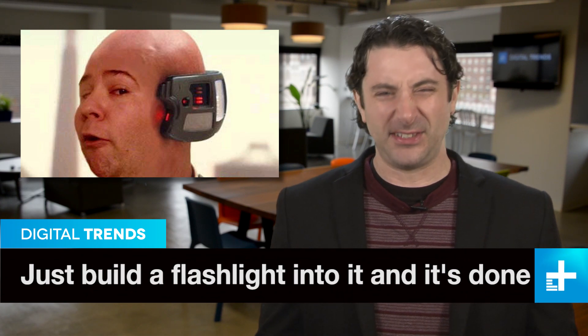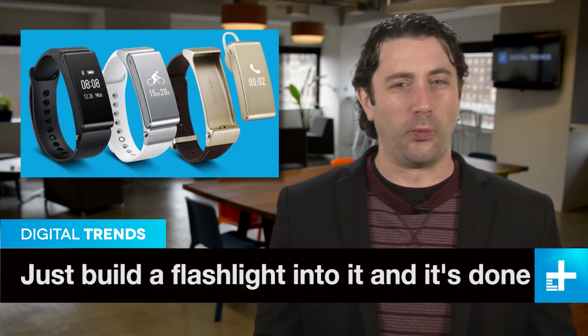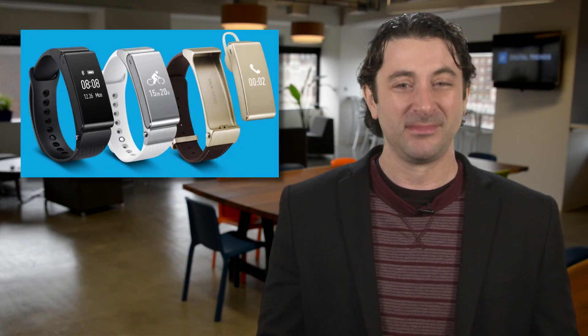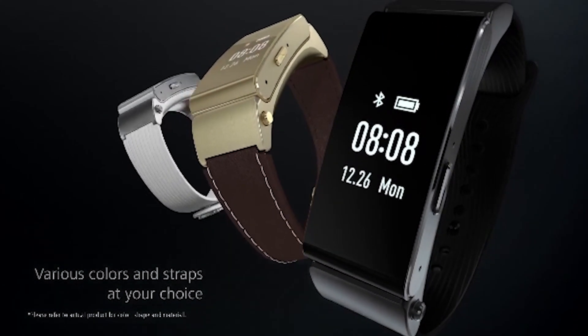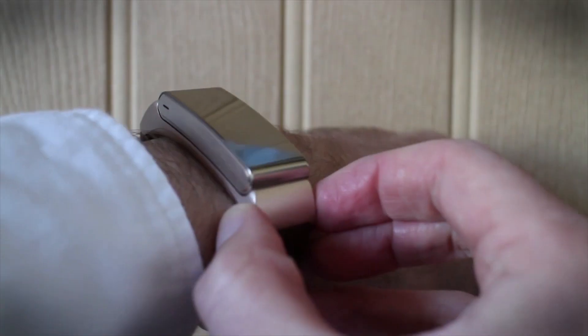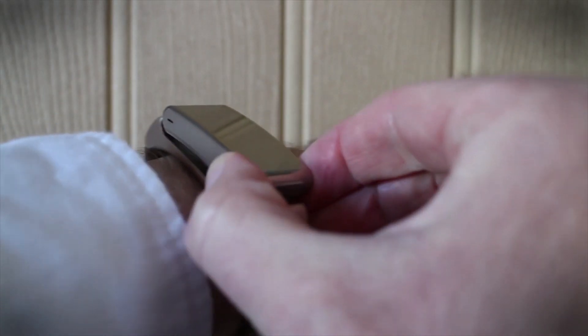Okay, Bluetooth earpieces are pretty 2005, but when they're also a cool watch that looks like this, well, it's time for a closer look. It's called the Huawei TalkBand B2, and we must admit the cool factor is pretty high. See, it's a watch, and then boom, a somewhat stylish ear bug.